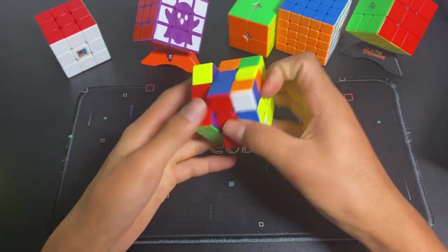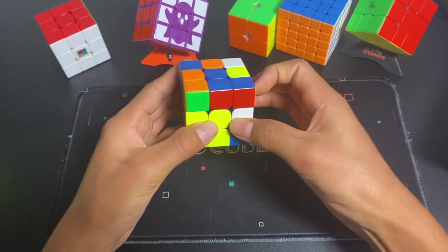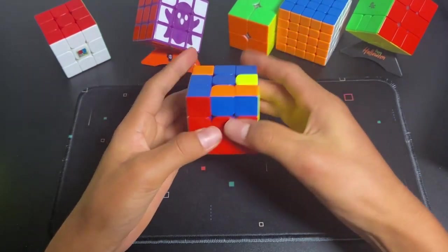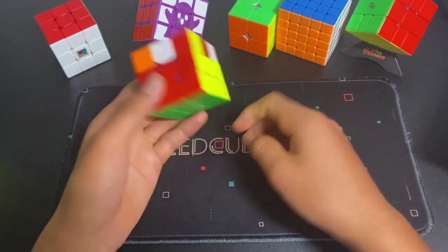And then you solve that one. And then here, the last two pairs are on the front, which results in very good look ahead. And you can go straight into OLL and PLL.